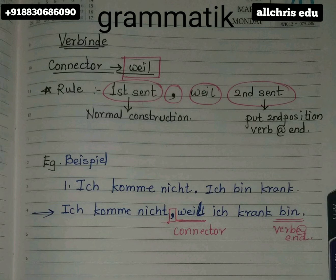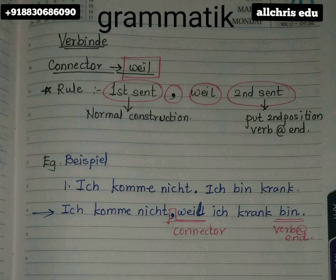So the structure is: write the first sentence normally — as I have taught you before with pronouns and verbs. Then put a comma — I have circled it in red. The comma plays an important role; your marks will be deducted if you don't put it. After the comma, write the connector 'weil', then write the second sentence. But while writing the second sentence, move the verb to the end — take it and put it at the end of the sentence.